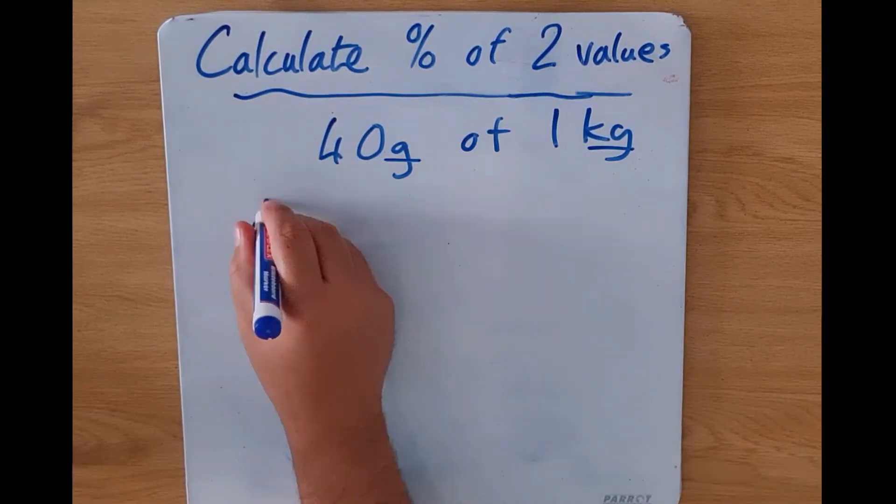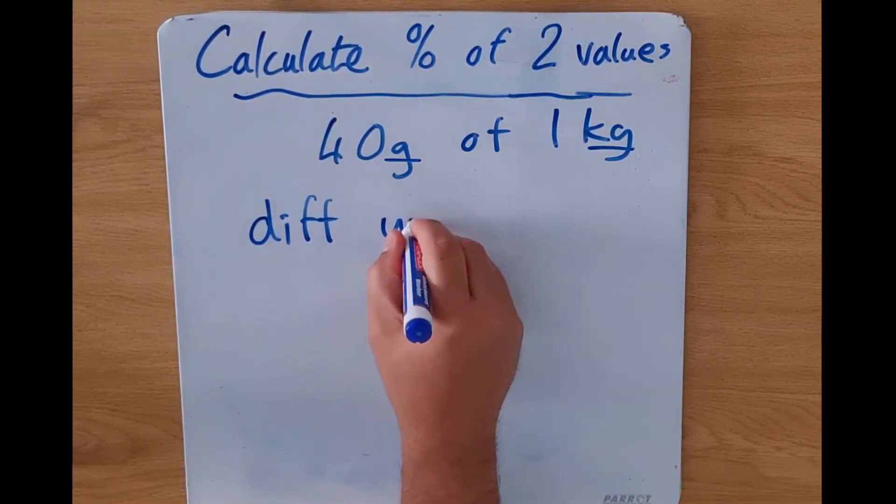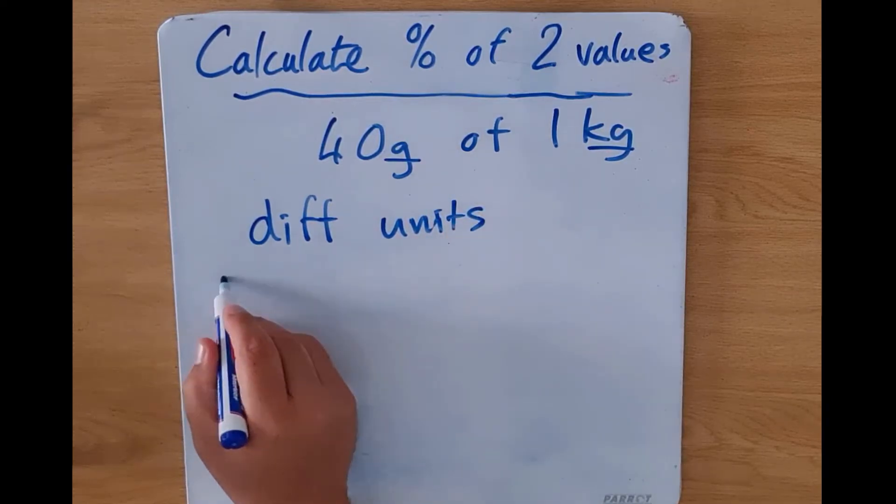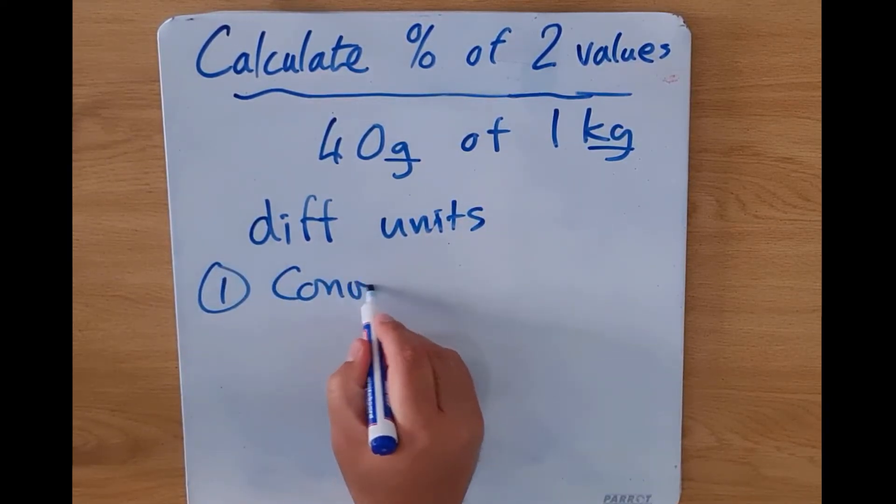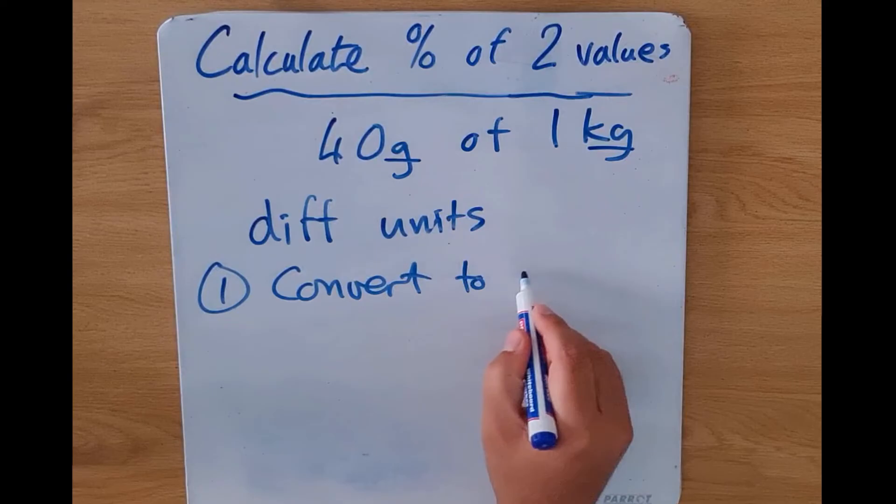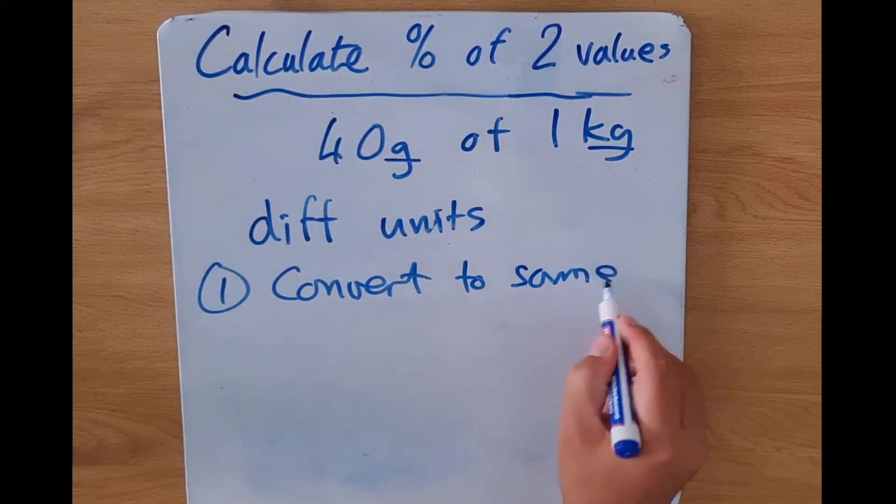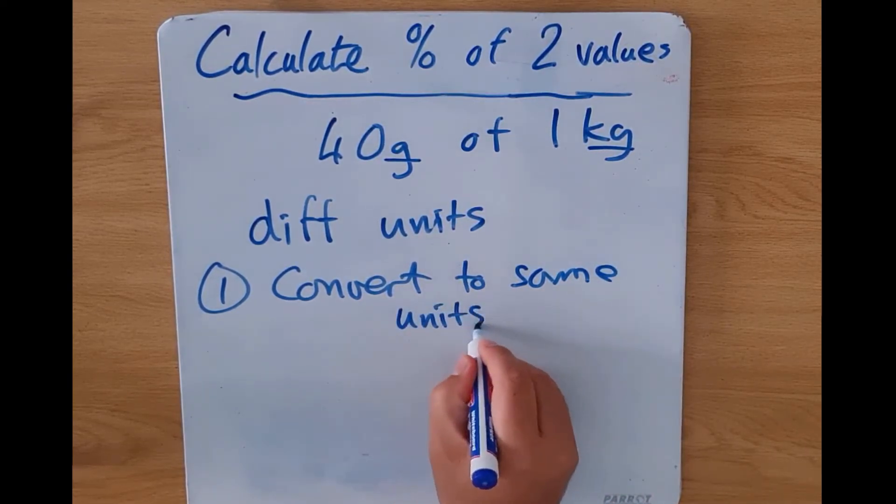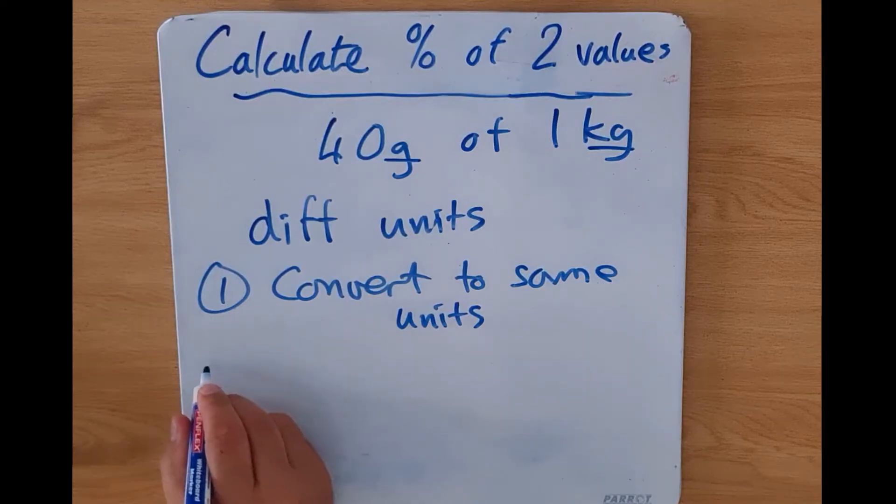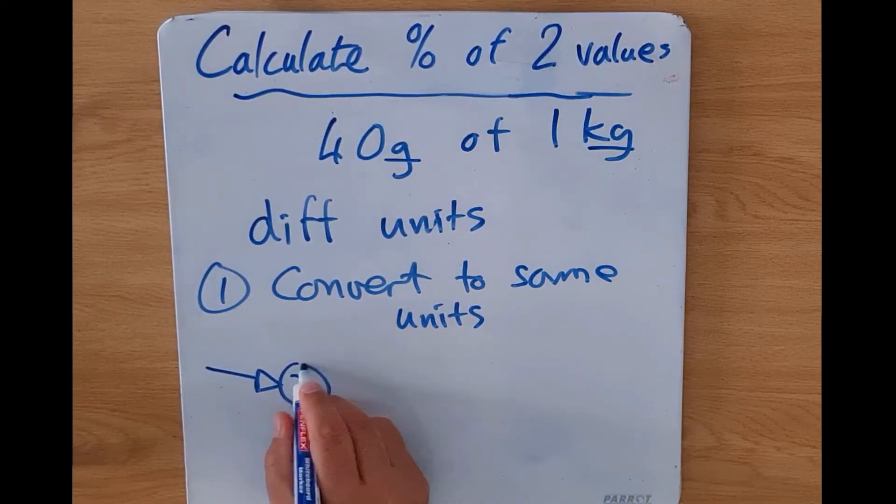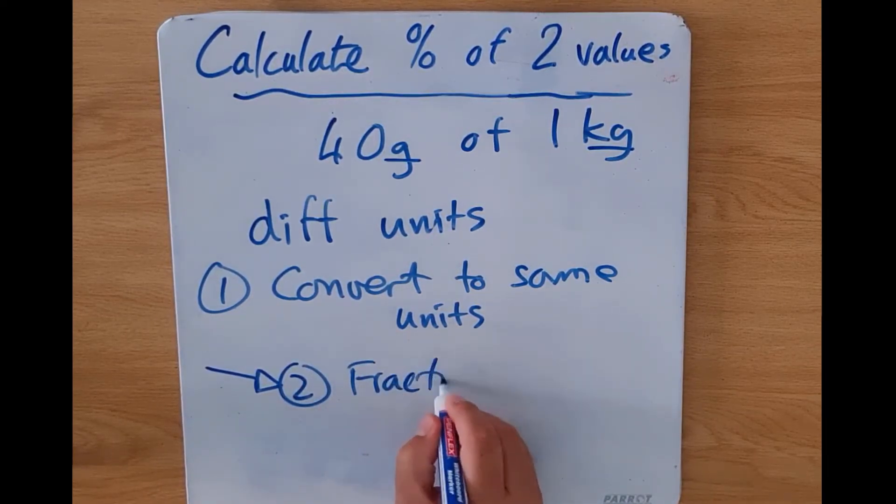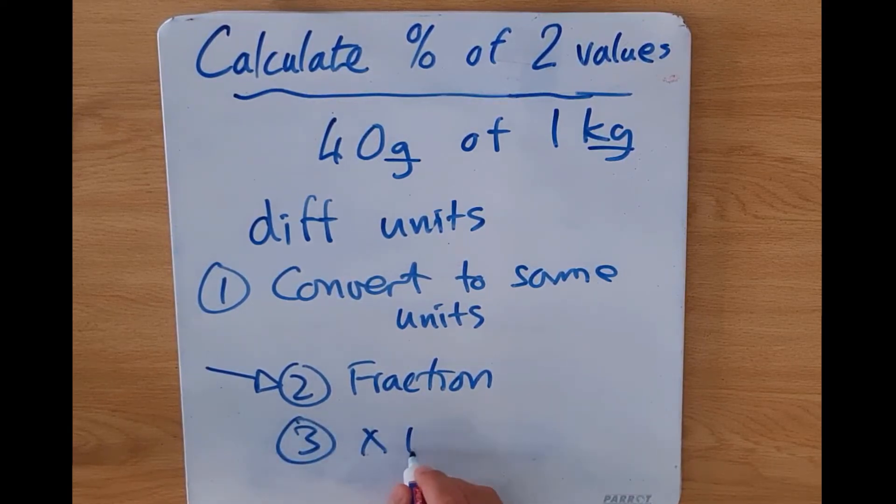So again, where we have different units, the first step is to convert to the same units, and then we can proceed with step number two which is our fraction, and then we can multiply it by 100.